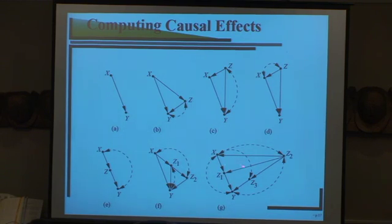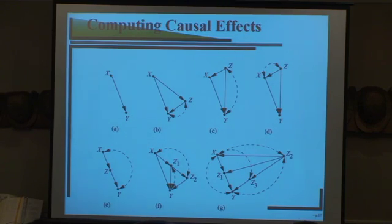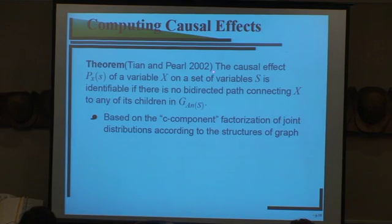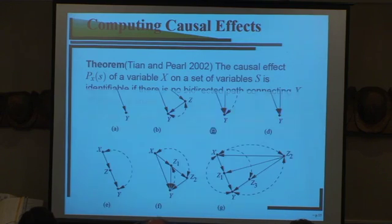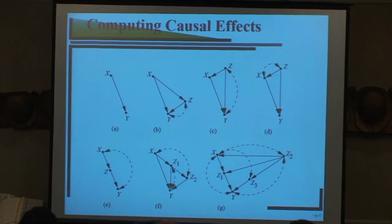Having taken Pearl's class and TA'd for Pearl, this type of problem always gave me a headache, so I thought about whether there was another way to solve it. I figured out a way: a theorem stating that the causal effect of a singleton X on a set is identifiable if there is no bad directed path connecting X to any of its children in the graph. This theorem covers all of those examples and also covers front-door criteria, back-door criteria, and in fact all criteria in Pearl's book concerning singletons.